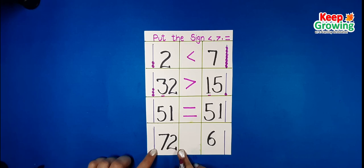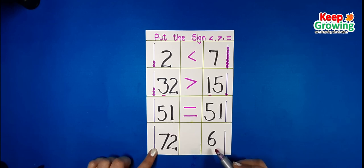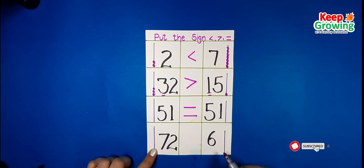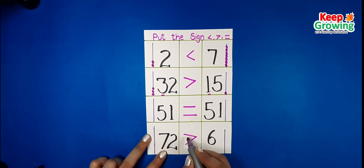Our next number is number 72 and number 6. Always remember that a single-digit number is always the smaller one. Number 6 is the smaller number and number 72 is bigger than number 6. Ali the alligator, who always eats the bigger number, eats number 72. The open mouth of the alligator is always towards the bigger number.